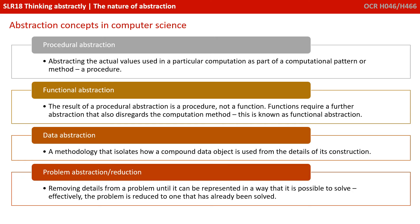The result of a procedural abstraction is a procedure, not a function. With many procedures, we can supply inputs and they provide an output — we've now become a function. Functions therefore require a further abstraction which disregards the internal computational method. This is functional abstraction, where we only care about what goes in and what comes out, not what happens in the middle.